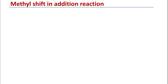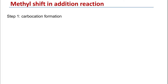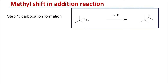We can also see these hydride and methyl shifts in electrophilic addition reactions to alkenes. In alkenes, the first step will be carbocation formation. Here we have an alkene and hydrogen bromide. The first step will be the electrophilic addition of the hydrogen from hydrogen bromide, while the double bond acts as the nucleophile attacking the hydrogen, and the bromide leaves as a bromide anion. That will generate the secondary carbocation.